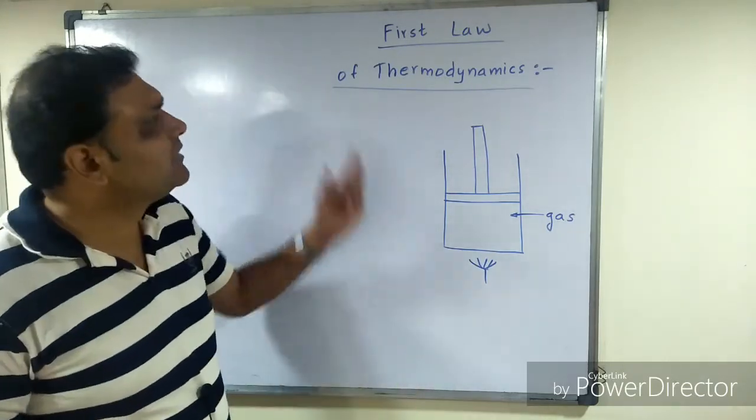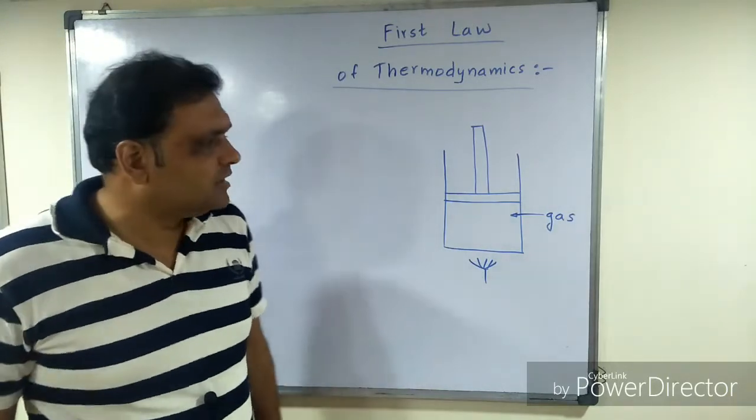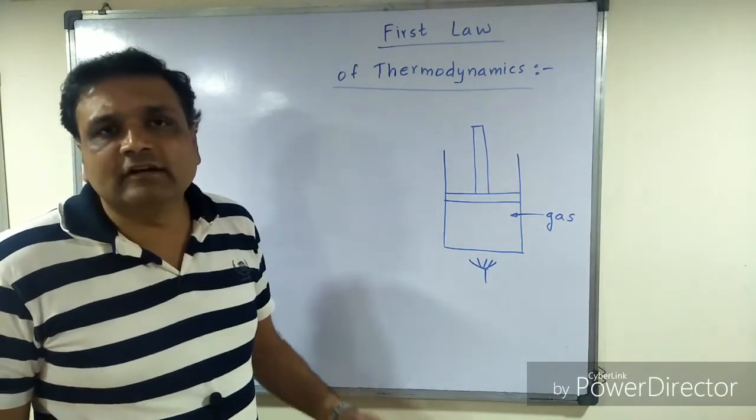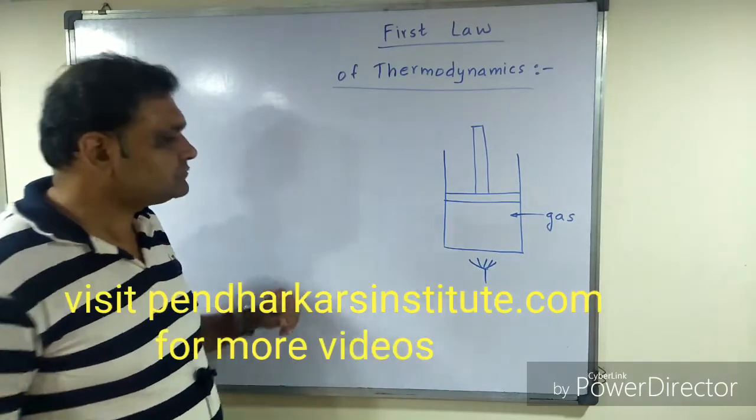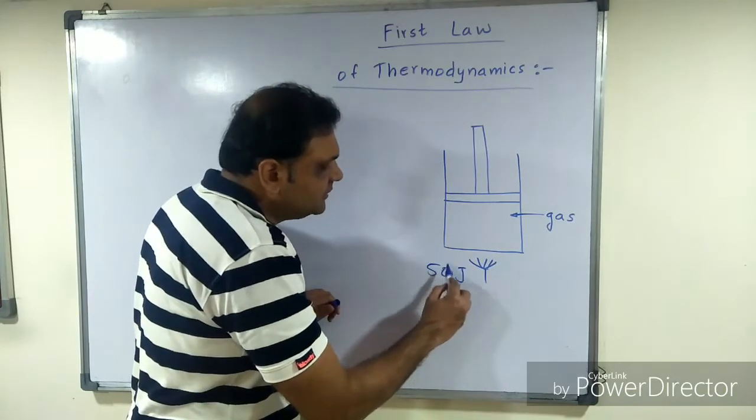Let us try to understand the mathematical expression for the same. Imagine I am giving 50 joules of energy to this gas. The gas will use it in two ways.